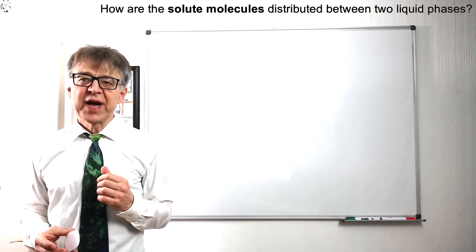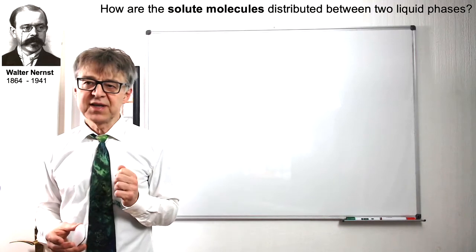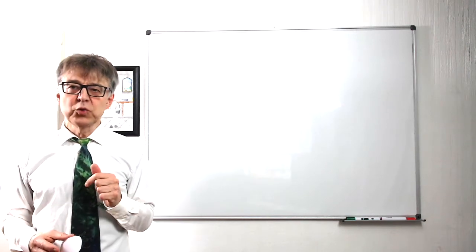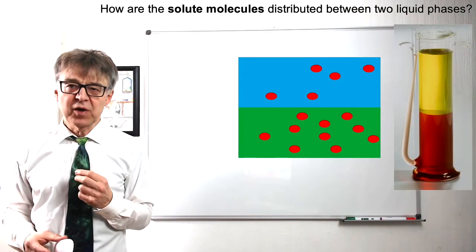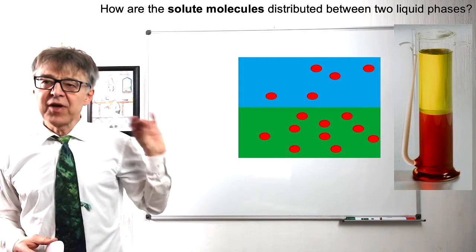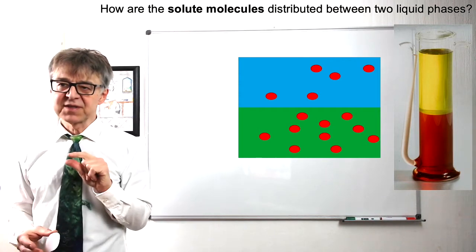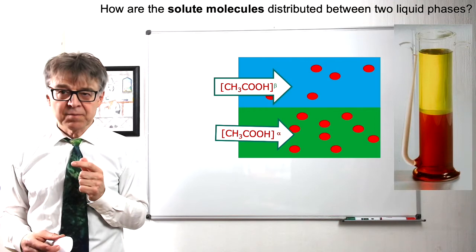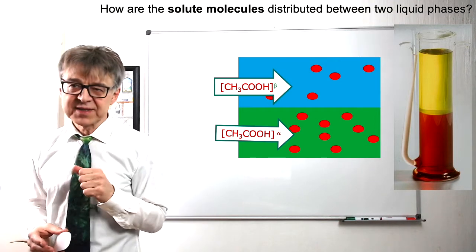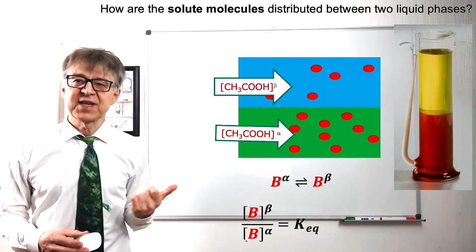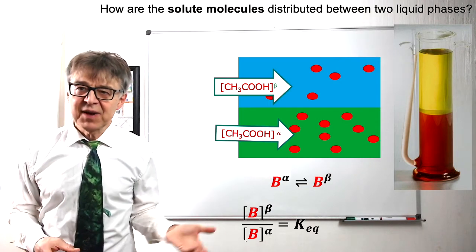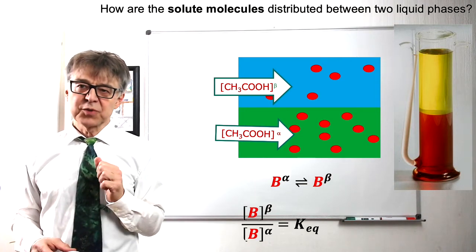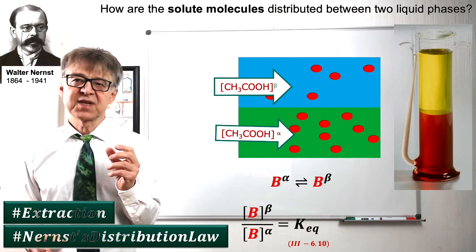For the sake of completeness, we can also mention another phase equilibrium here, namely the distribution equilibrium, which was described by Walter Nernst. We start with two non-miscible liquids, for example water and oil, and we are adding a third component that can switch between these two solvents, that can pass the phase boundary, for example acetic acid. Again, we use kind of the law of mass action and state that the concentration of acetic acid in the organic phase divided by the concentration of acetic acid in the aqueous phase is a constant. Nernst's distribution law is important for the separation process of extraction.